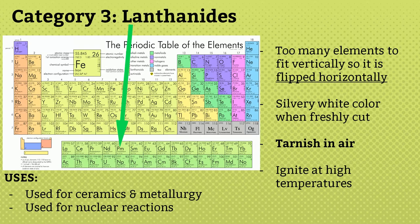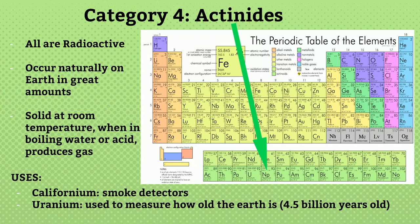Category 4: they are actinoids, also placed below the periodic table. All are radioactive elements. They occur naturally on Earth, are solid at room temperature, and produce gas in boiling water or acid. Californium is used in smoke detectors, uranium is used in nuclear reactors, and is also used to measure how old the Earth is. They all belong to the 7th period.